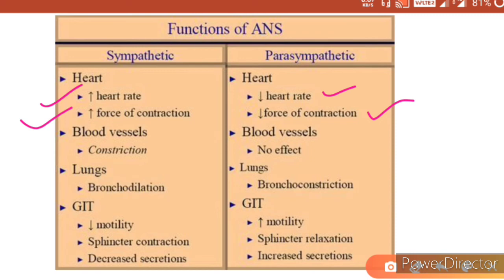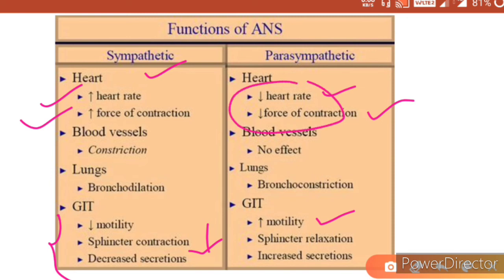At most other parts the action is reversed: sympathetic system inhibits and parasympathetic system stimulates. In the GIT, the sympathetic system causes decreased motility, sphincter contraction, and decreased secretions. Apart from the heart, everywhere else the sympathetic system decreases everything, and the parasympathetic system increases — so gastric motility increases, sphincter relaxation occurs, and increased secretion is seen with parasympathetic activity.